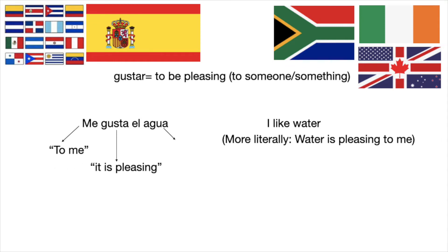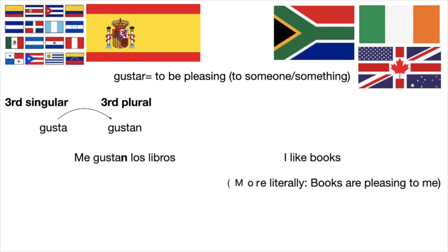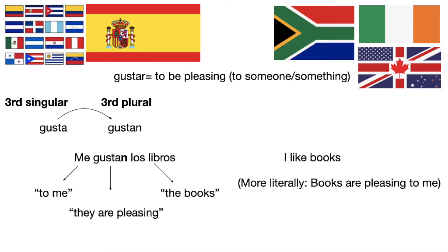If the thing that's being liked is plural, then the verb gustar has to be conjugated in the third person plural. For example, if you say 'I like books,' you would say me gustan los libros. The gusta becomes gustan because now you're saying 'books are pleasing to me.'